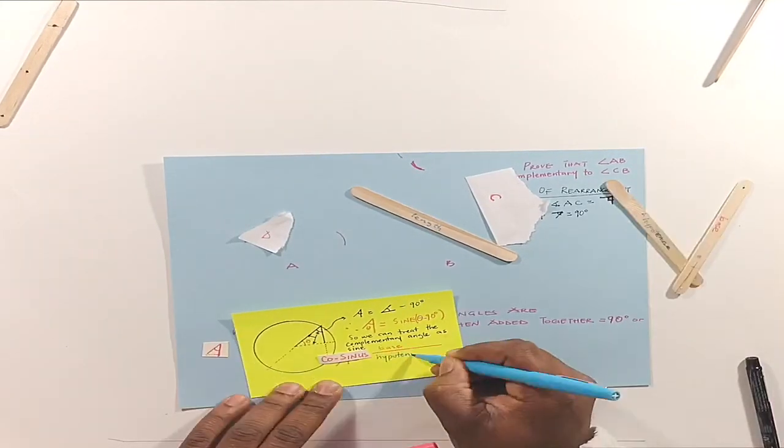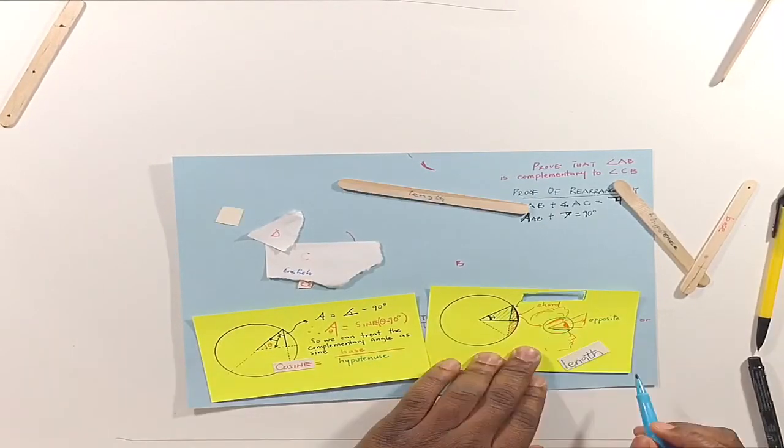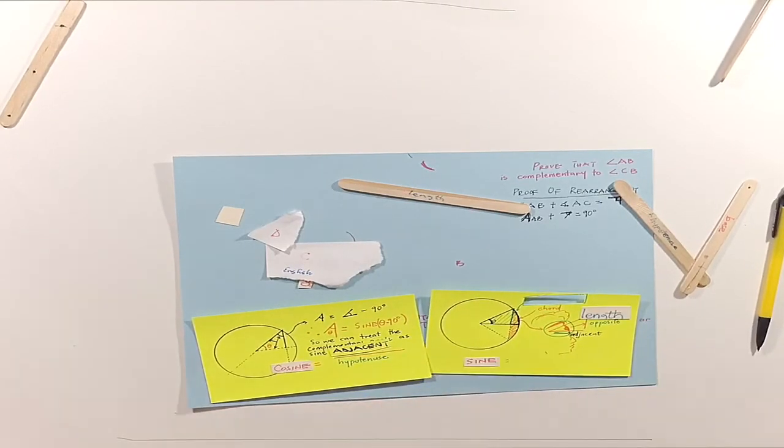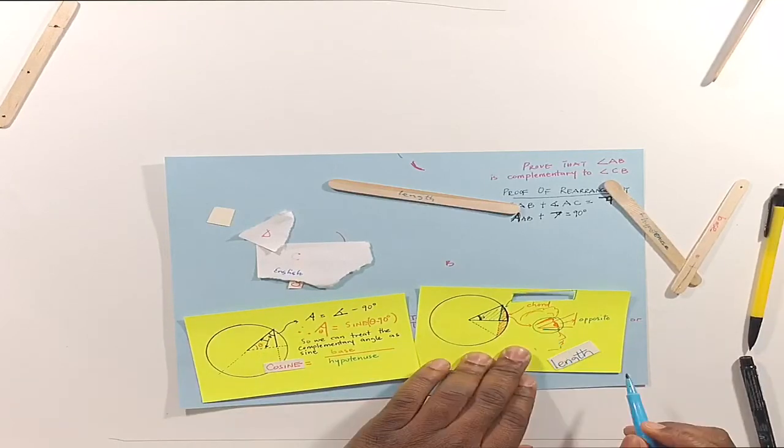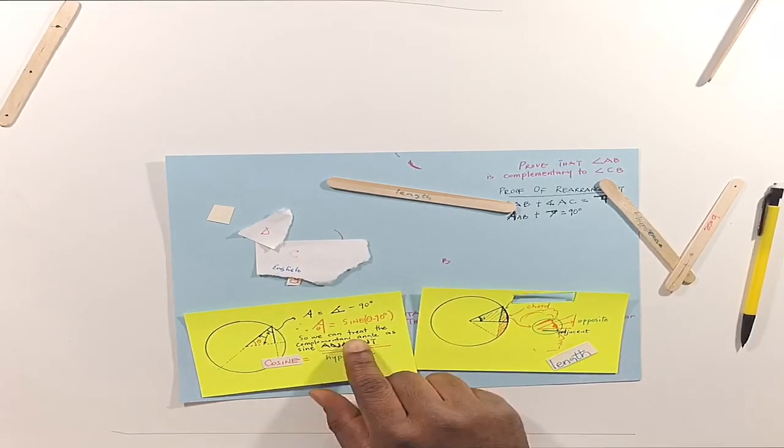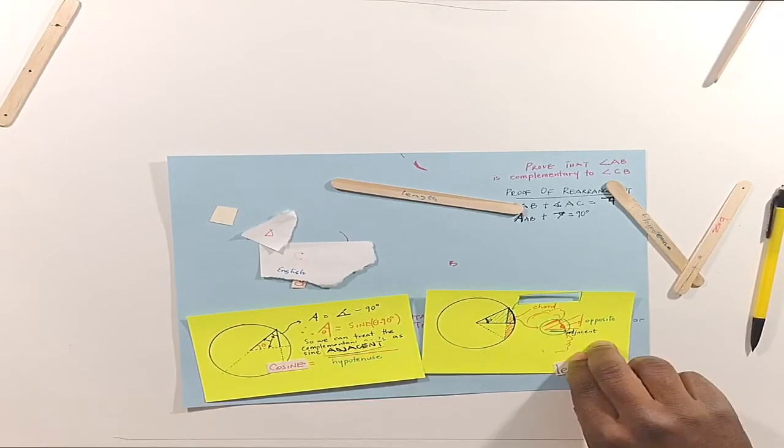So instead of writing the complementary angle, let's replace that with cosine. It is the sine of the complementary angle, and we said that sine is the opposite divided by hypotenuse. And observing from the hypotenuse angle, let's replace the opposite with adjacent instead. So now we have the cosine of an angle is equal to the adjacent divided by hypotenuse.